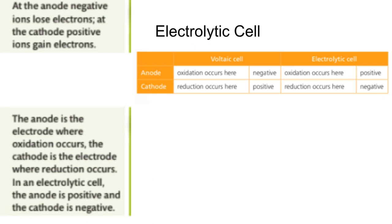And so, this is showing the difference. So in a voltaic cell, remember the anode is negative, but in an electrolytic cell, it's positive. But note that oxidation occurs at both of them. In the cathode for the voltaic cell, it's positive. The electrolytic cell, the cathode is negative. And this is where reduction happens.